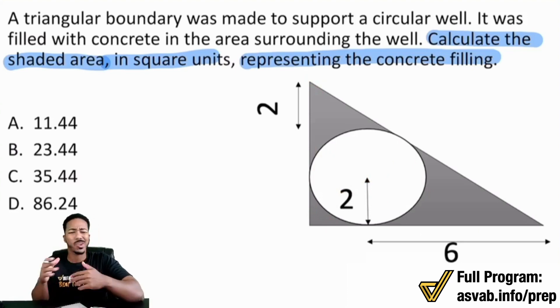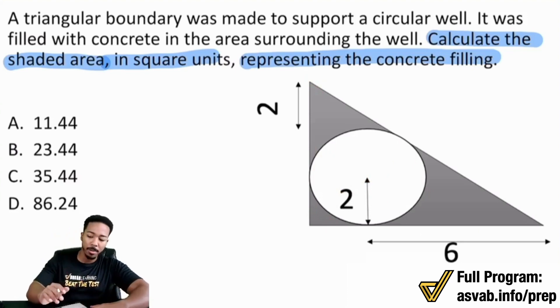We're not trying to calculate this right here. It kind of looks like we have a triangle and then we're taking out this circular piece, right? So we're going to keep things simple before we get into all the formulas and all that stuff. A triangular boundary was made to support a circular well. It was filled with concrete in the area surrounding the well. So this is a well and this is the concrete that's surrounding it.